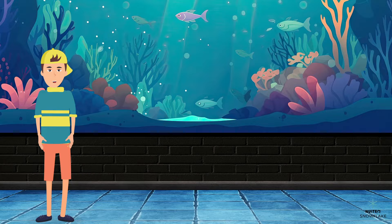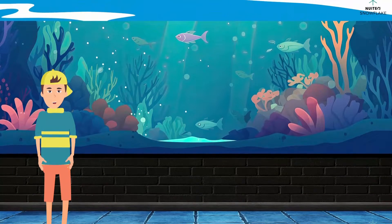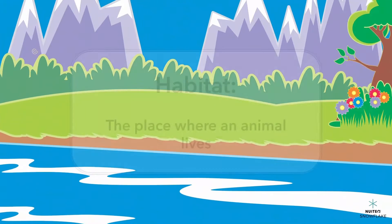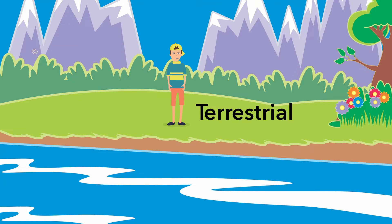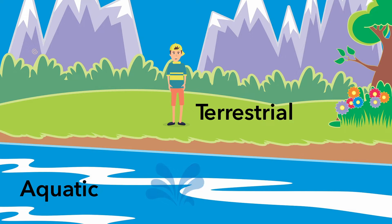Habitat is a fancy word that means where an animal lives. Terrestrial animals live on land, like you and me. Aquatic animals, on the other hand, live in water, like fish, dolphins, and whales.